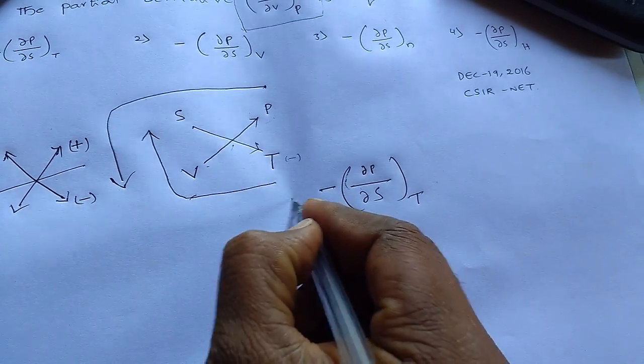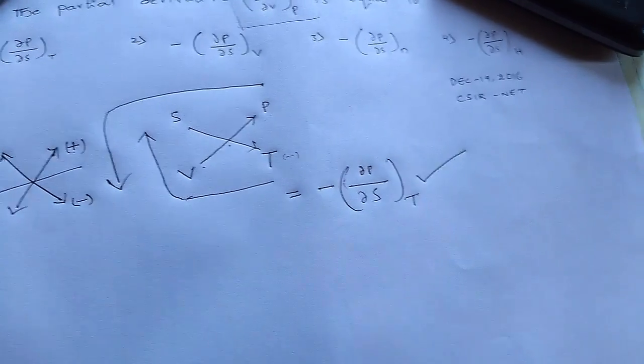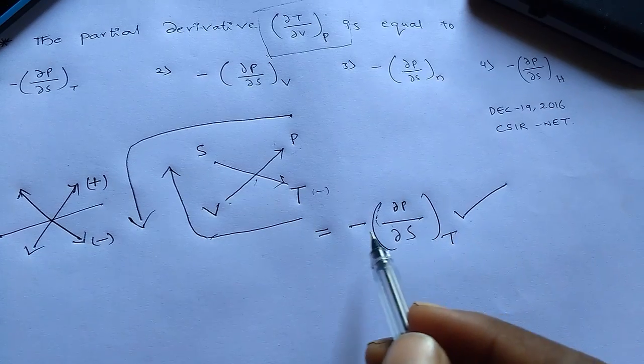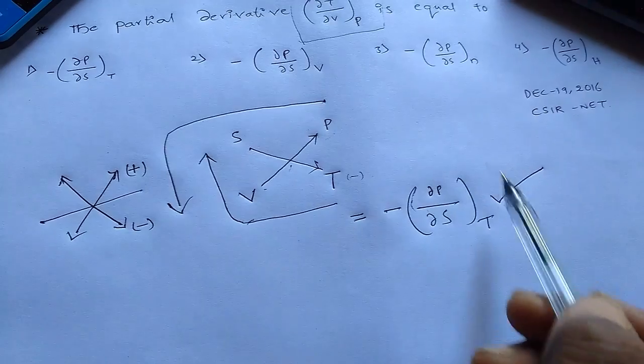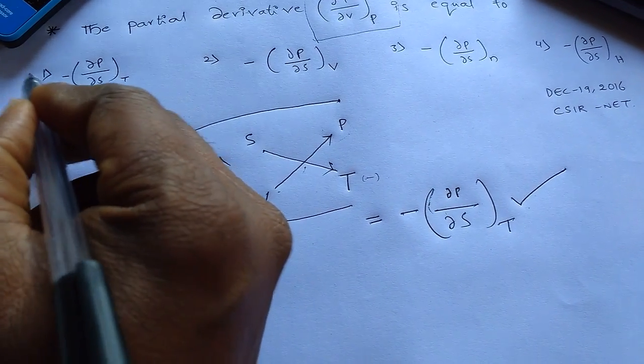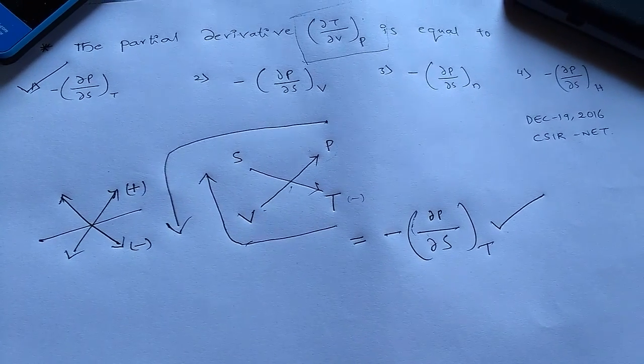So our answer is this one. Check this one. Dou P by dou S, minus dou P by dou S T. So this is the correct answer for the given problem.